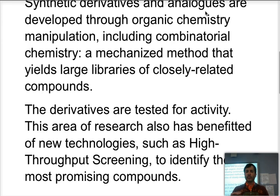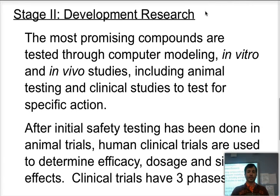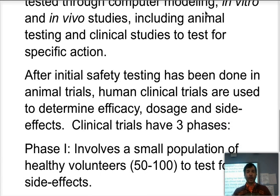Once we have identified the compounds with the best activity, we move into stage two: development research. We start with computer modeling, then testing in vitro — whether on tissues, chemicals, or directly on proteins — and eventually move to in vivo studies including animal testing and eventually human clinical trials. Before moving into human clinical trials, drugs are tested on animals for safety testing to confirm they are not so toxic that they would harm humans. Human clinical trials are used to determine efficacy, dosage, the dosing regime, and to identify side effects.